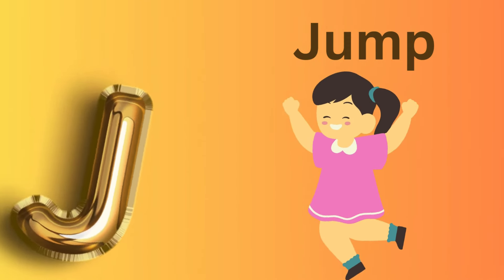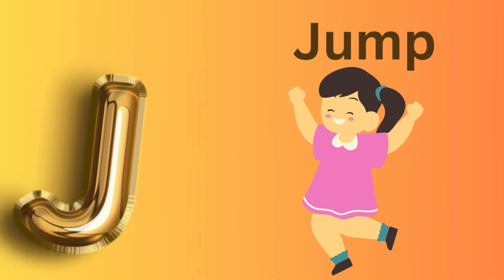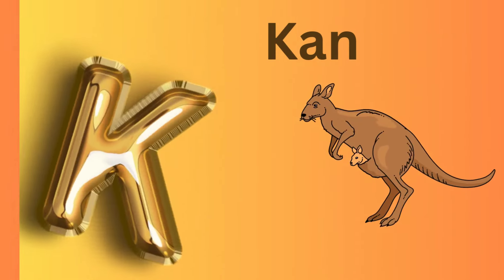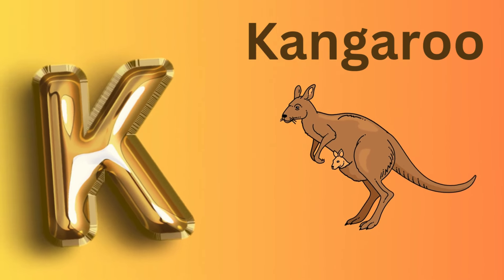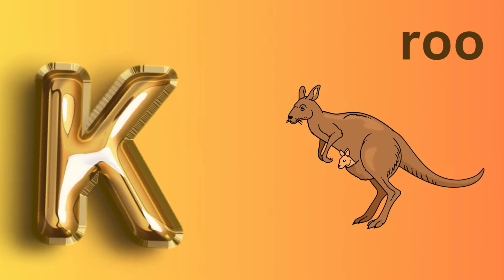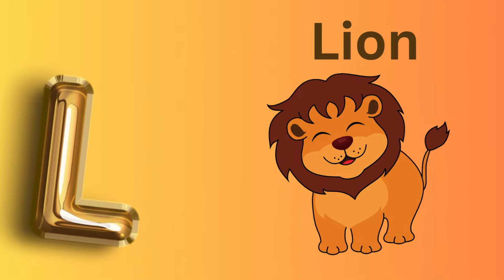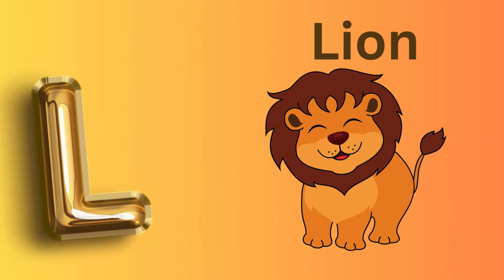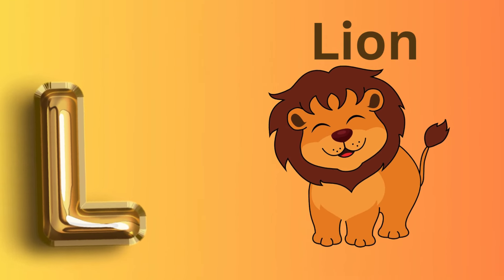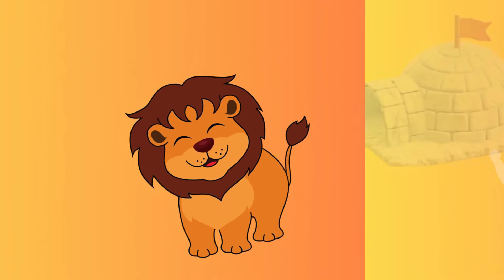J is for Jump, J-J-Jump. K is for Kangaroo, K-K-Kangaroo. L is for Lion, L-L-Lion.